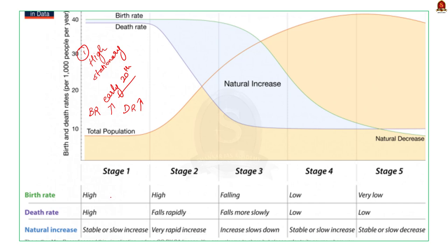Countries in this stage are mostly agricultural in nature and also follow primitive forms of agriculture. People prefer to have more children as they see children as an additional source of labour in their farms — this is the reason for the high birth rate. There is also a high death rate due to the lack of modern healthcare facilities. The high birth rate is compensated by the high death rate and hence the population remains stable.